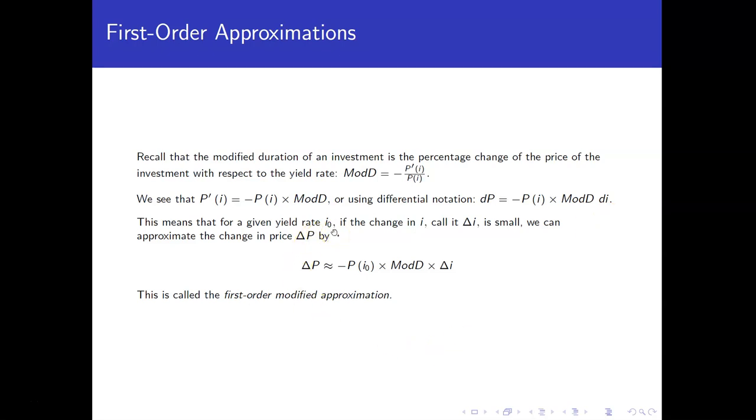So for a given yield rate, say i0, let's call the change delta i, and assuming that it's small, we can approximate the corresponding change in price by plugging in i0 in for the price and using the modified duration multiplied by the change in interest rate. That's going to give us a change in price. So we can use the modified duration to help us get an approximate change in price based on a change in the interest rate. And this is what we meant by earlier when we mentioned that we have a measure with these duration calculations as a measure of interest rate sensitivity. So for this particular one, we call it the first order modified approximation.